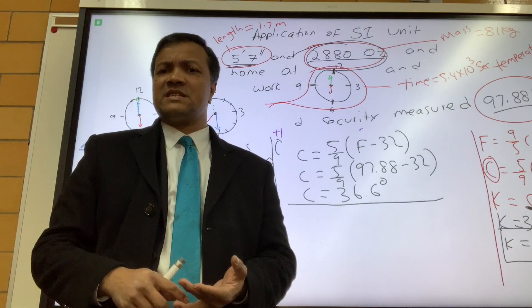So 36.6 plus 273 is equal to 310. So 310 Kelvin. All right, so next time we're going to do other three applications of other three SI units: luminous intensity, the amount of substance, and current.